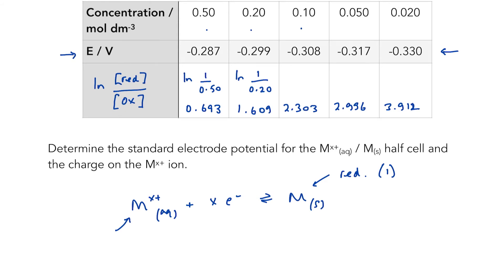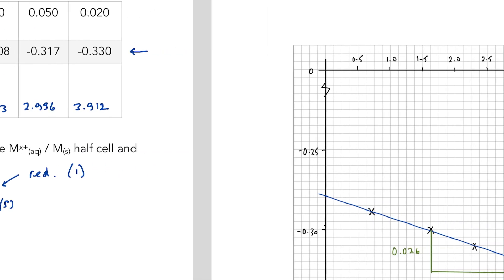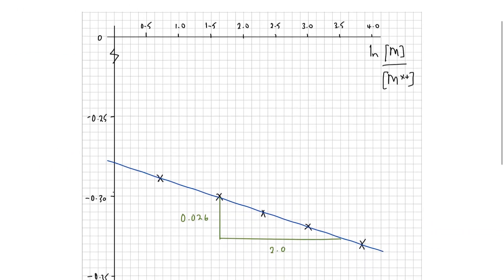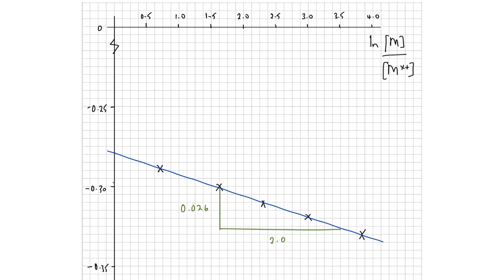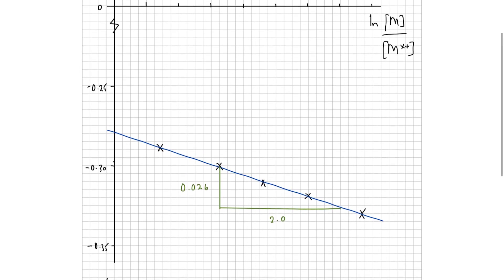Non-standard electrode potential on the y-axis against ln reduced over oxidized on the x-axis. And in true Blue Peter fashion, I have gone ahead and done that. You have no idea how long it took me to plot this graph, mainly because I got my x and y axes muddled up to begin with. Told you that's not my strong point. However, when eventually you get it right, you have a graph that looks like so.